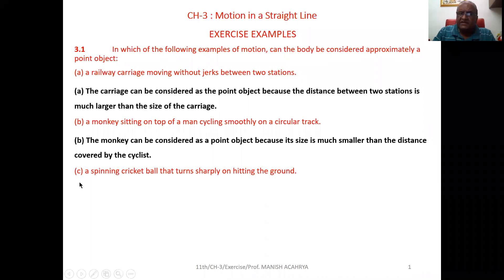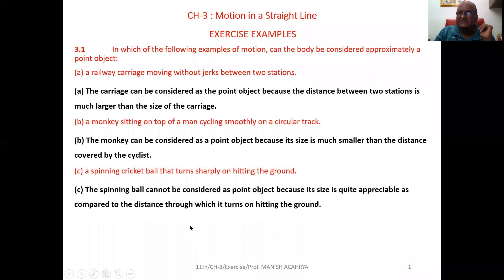Then see, C. A spinning cricket ball that turns sharply on hitting the ground. Now, when the ball hits the ground and after that it turns sharply, at that time the distance between the pitch and the batsman, pitch of the ball and the batsman, that is small one. Compared to that distance, we can't consider the size of the ball as very small. In this particular case, we will not consider the ball as a point object.